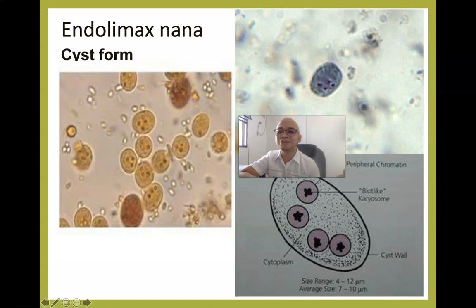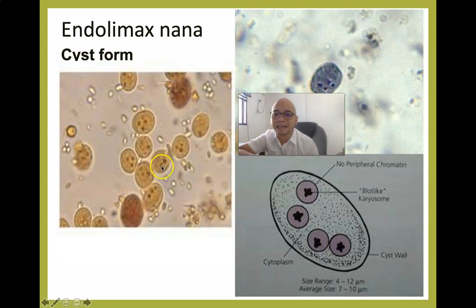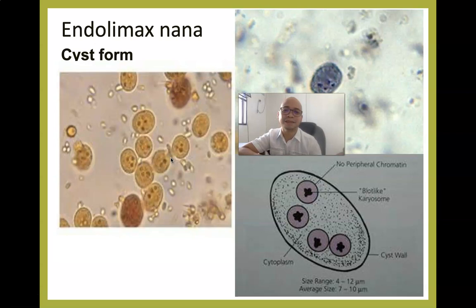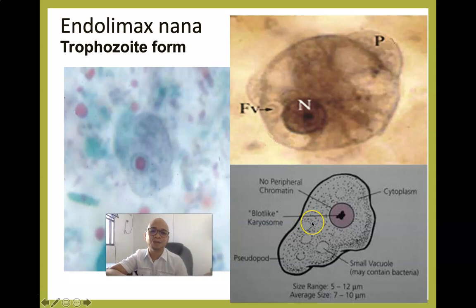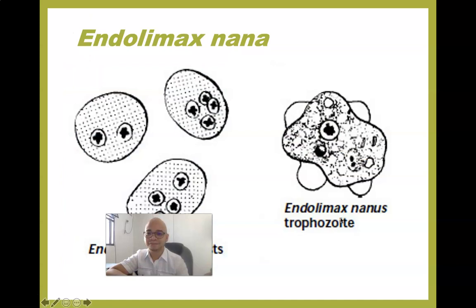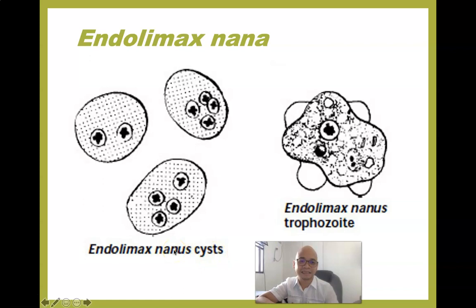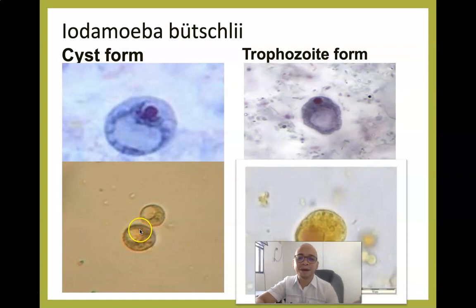Endolimax nana is another non-pathogenic human amoeba. Its cyst has two nuclei adjacent to one another, earning it the popular nickname 'cross-eyed cyst' among medical technologists. A distinguishing feature of the Endolimax nana trophozoite is the presence of the black-like karyosome. Both cyst and trophozoite forms are recognized.